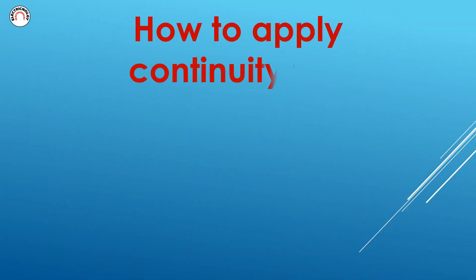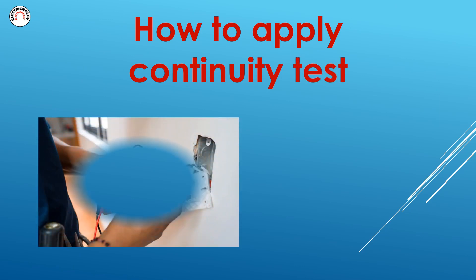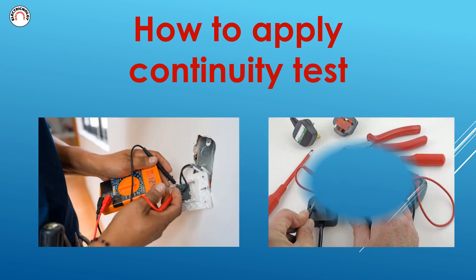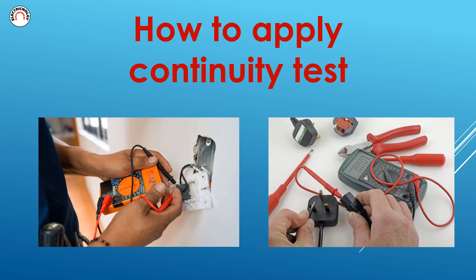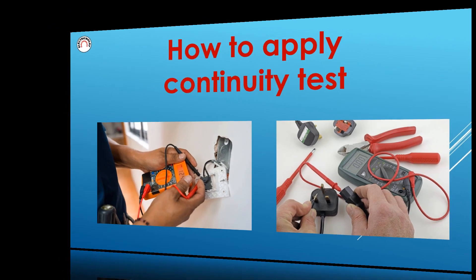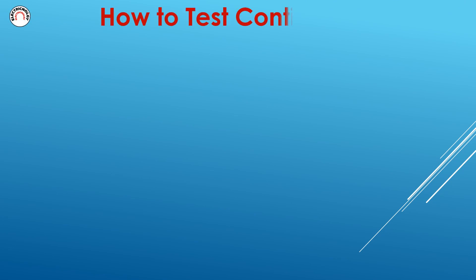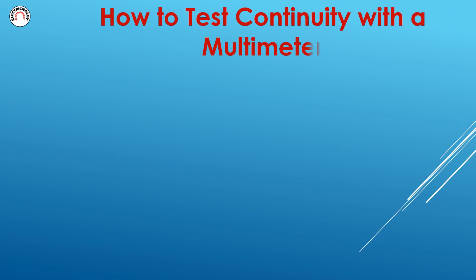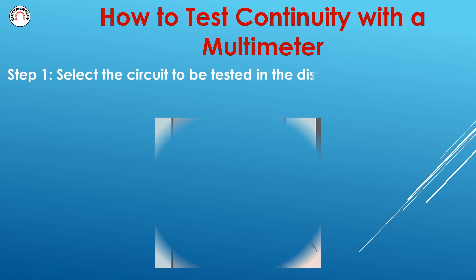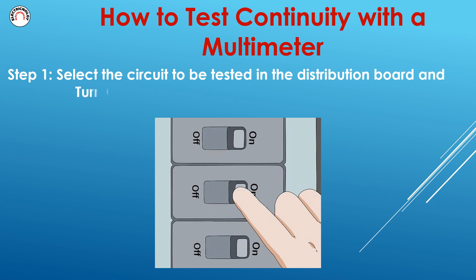How to Apply Continuity Test. Step 1: Select the circuit to be tested in the distribution board and turn off the breaker that controls the circuit.